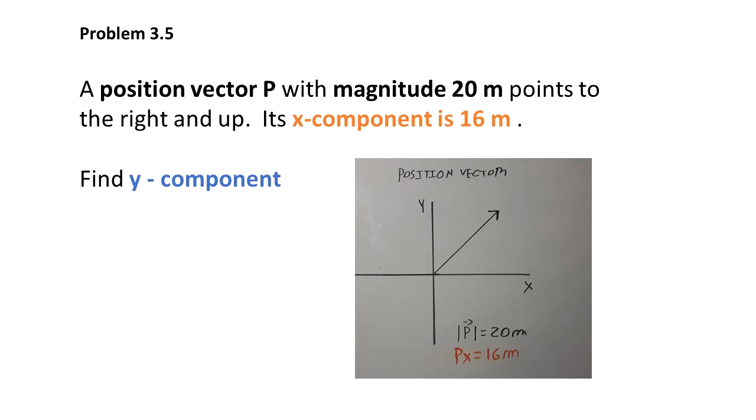A position vector p with magnitude 20 meters points to the right and up. Its x-component, px, is 16 meters. Find the y-component of this vector.